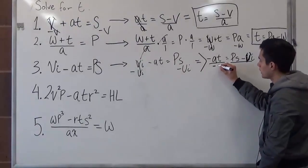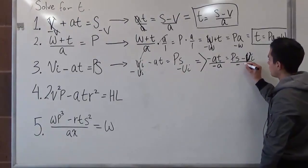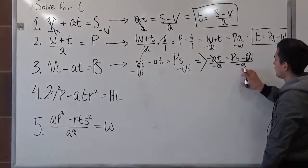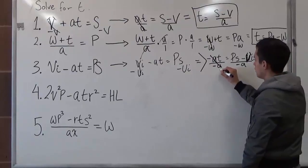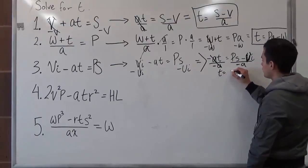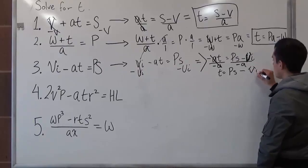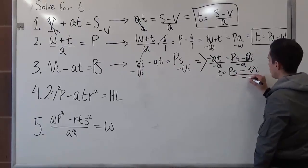So we can divide it by negative a, divide it by negative a. And this cancels out, and the negative a stays at the bottom here. So now we do have our t is equal to p s minus v i over negative a.